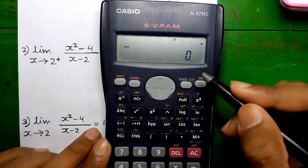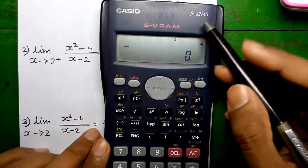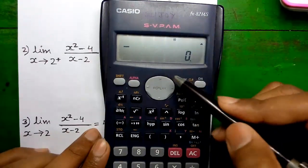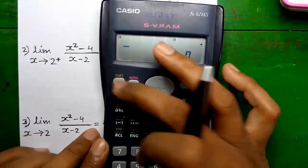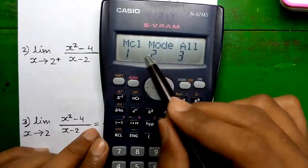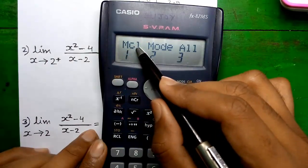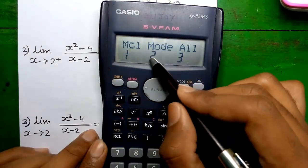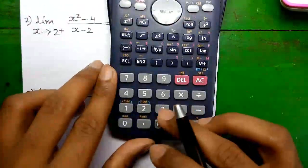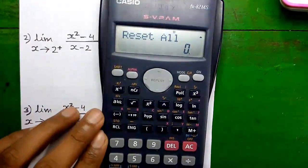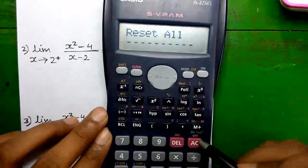Before we start the calculation, first you have to clear all the memories on this calculator, so that previous values don't override our present value. To clear, press Shift and the Mode button. Type 1 to clear memory, type 2 to clear mode, and type 3 to clear all. Press 3 and press the equals button. So reset all.